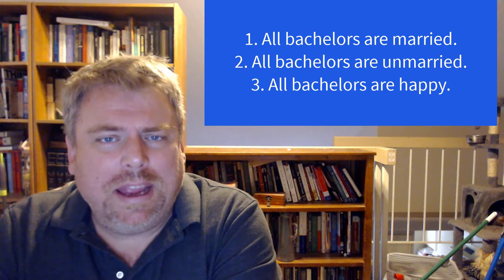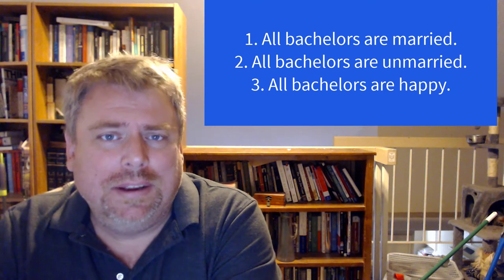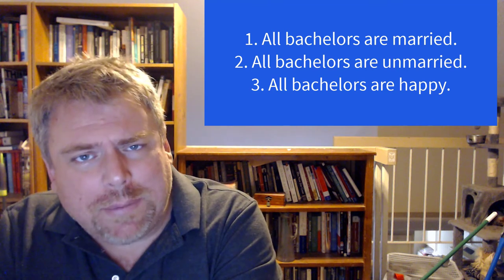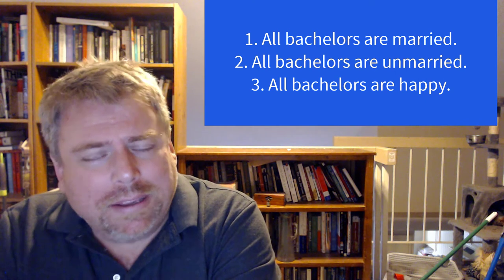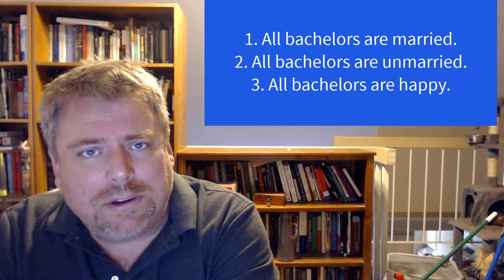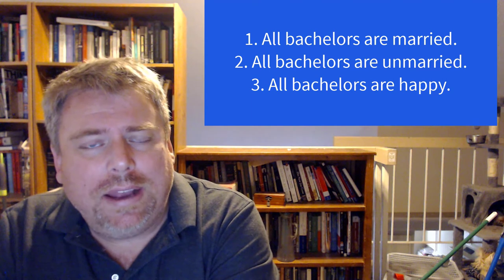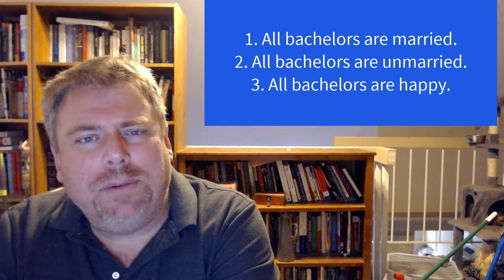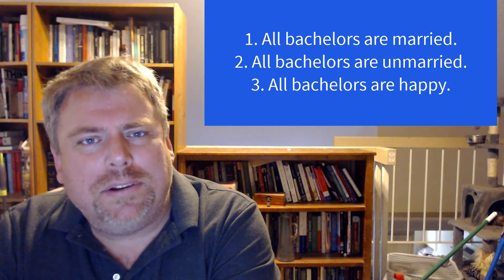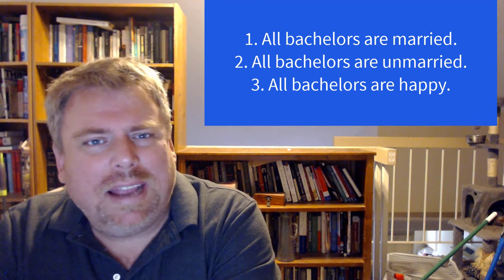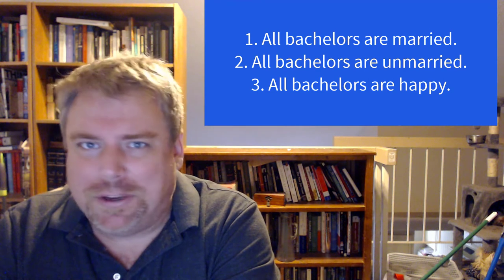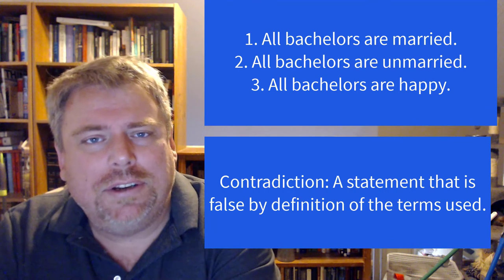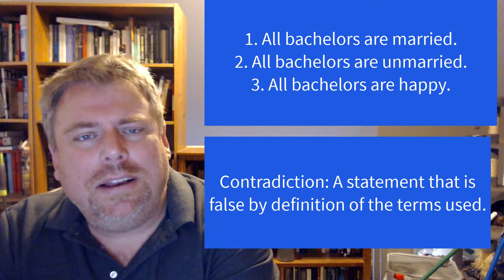Let's think about the truth value of those statements. Take the first one: all bachelors are married. Is that true or false? Given the definition of a bachelor as an unmarried adult man, when we say all bachelors are married, we're saying unmarried adult men are married — and that seems to be false because it can't be true. This is what we call a contradiction.